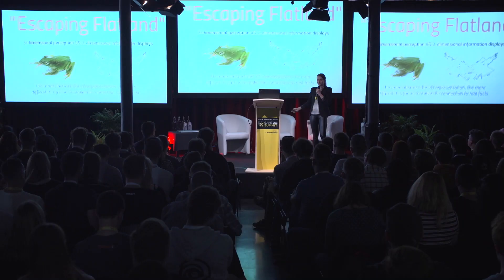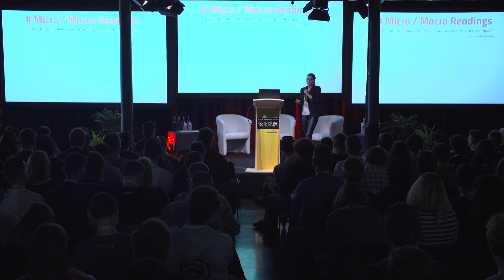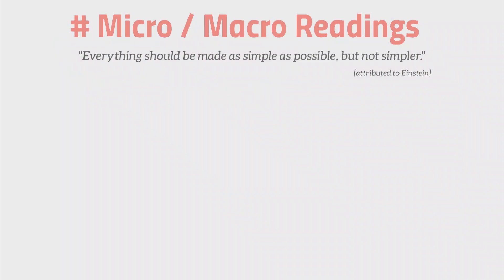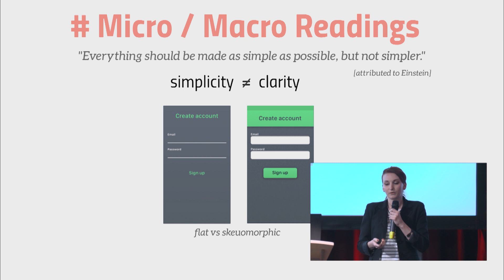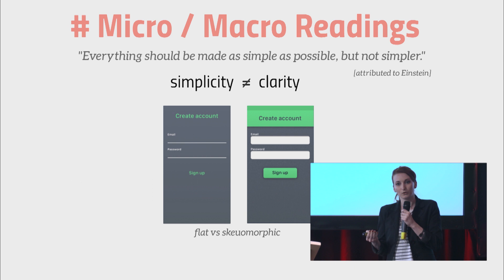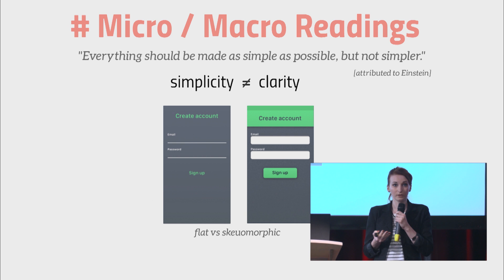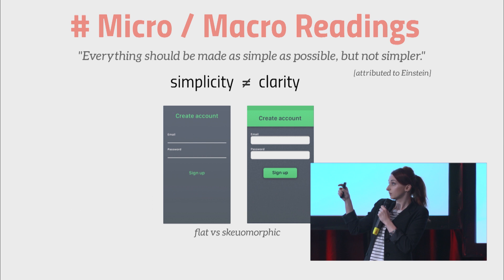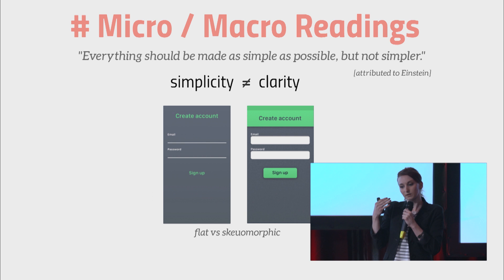The first principle is called micro and macro readings. As the famous quote says, "Everything should be made as simple as possible, but not simpler" — because simplicity does not equal quality. A good example is flat or minimalistic design versus skeuomorphic design. While minimalistic design is beautiful, at some point the additional detail matters for affordances and interaction — like a small shadow that underlines a button, prompting you to click it.